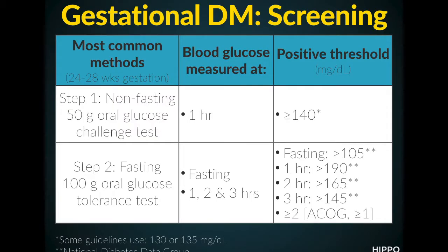The most widely used approach is this two-step process. Step one is a screening glucose challenge test, and if that's positive, then we move on to step two, which is a diagnostic glucose tolerance test.